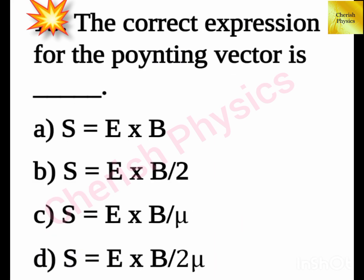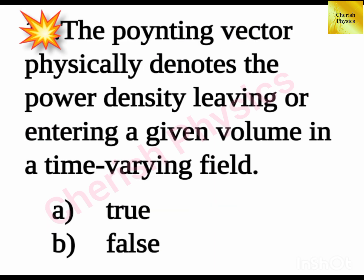The correct expression for the Poynting vector is dash. The flux density leaving or entering a given volume in a time-varying field.